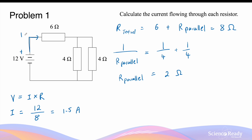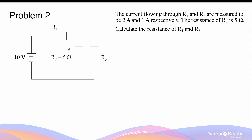The 1.5 amps flows through the 6 ohm resistor. When it reaches the junction at the start of the parallel circuit, the 1.5 amps splits into two. Since both parallel resistors have the same resistance of 4 ohms, the current divides evenly — 0.75 amps through each. This applies Kirchhoff's current law: the current into the node equals the total current coming out. So the results are 1.5 amps for the 6 ohm resistor and 0.75 amps for each 4 ohm resistor.